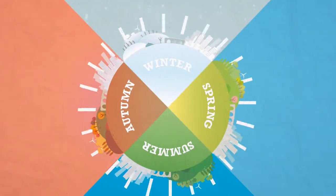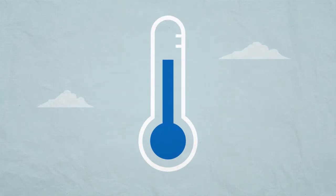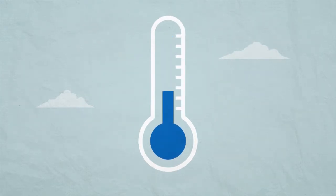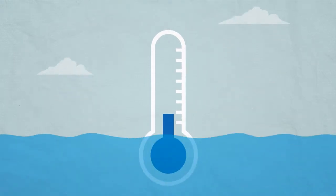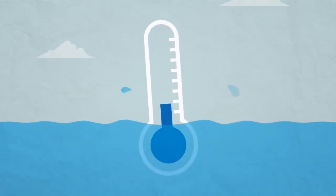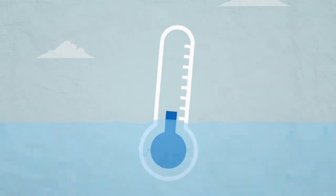Snow usually falls in winter when it is very cold. It forms when the temperature is below zero degrees Celsius, also known as the freezing point of water.